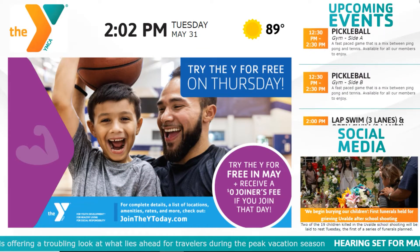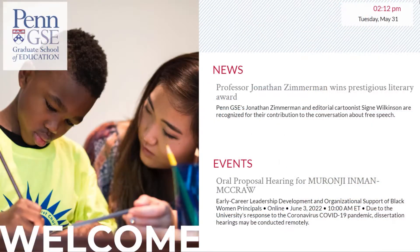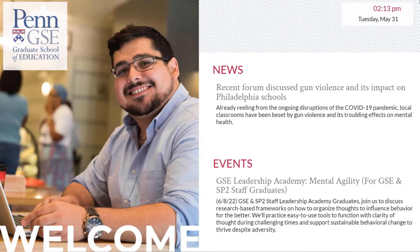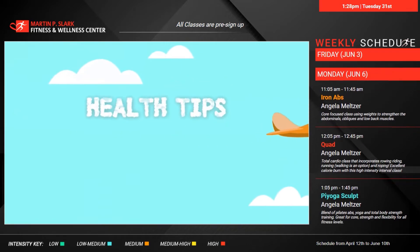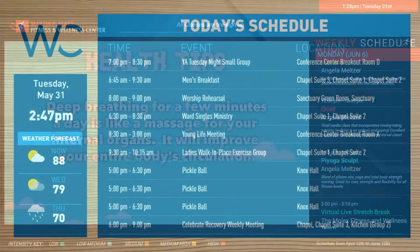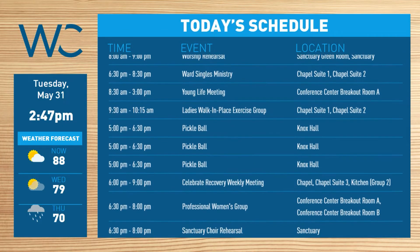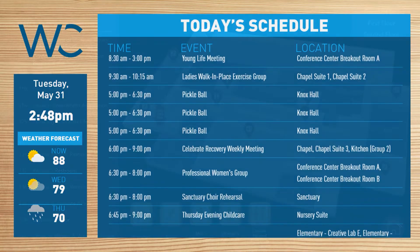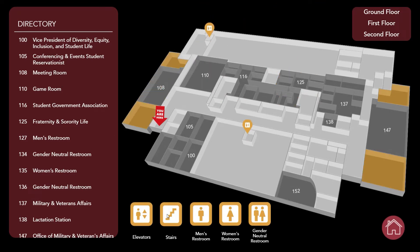Use digital signage to keep your audience informed of important dates, events, and deadlines. Whether you're a university needing to keep students informed of campus events, a recreation facility wanting to easily display upcoming fitness classes, or an office building looking to better utilize meeting room spaces, our solution can help improve efficiency by integrating existing calendars and displaying real-time updates. Digital displays can also include dynamic wayfinding to help your audience navigate through your campus or building.